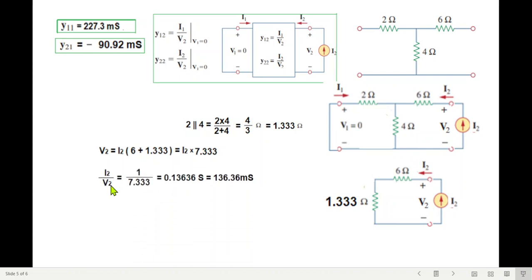i2 over v2 is y22, therefore y22 is 136.36 millisiemens. So now what is left is y12.